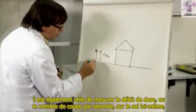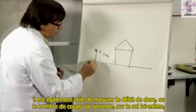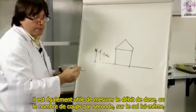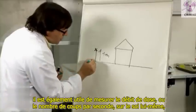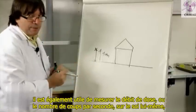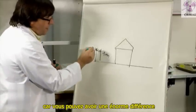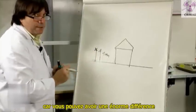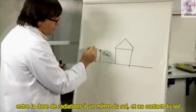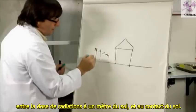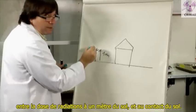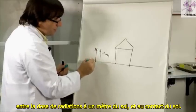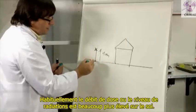it's also useful to measure the dose rate or the number of counts per second on the soil itself. Because you may have a huge difference between the dose of radiation at one meter above ground and on the contact of the ground.